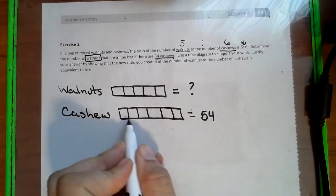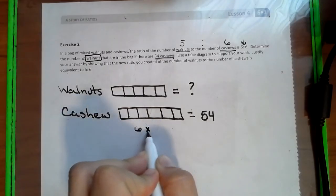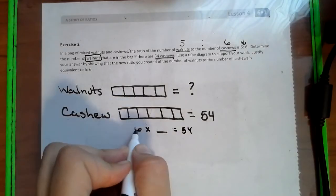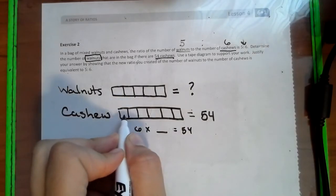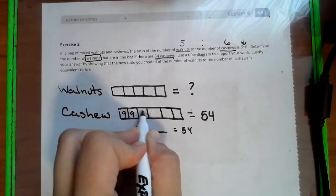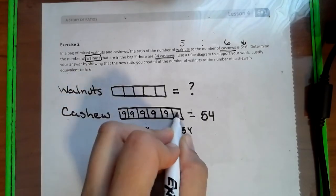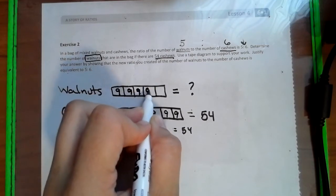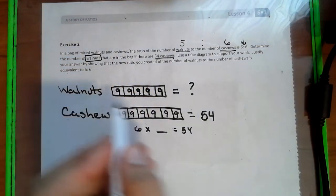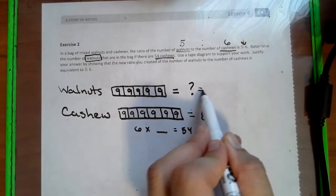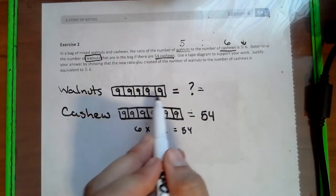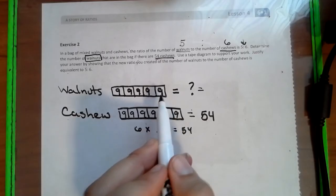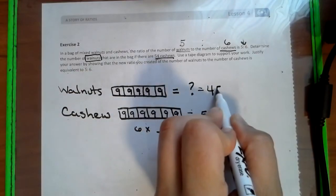So a lot of kids think 6 boxes times what gives us 54? And we come up with the answer of 9. So we put 9 in each box. And we have to do the same here, because whatever we put in one box, we have to put in the other. So now we can easily find out the walnut number. So 9 times 5 or 9 repeat addition 5 times, and we'll end up with 45.